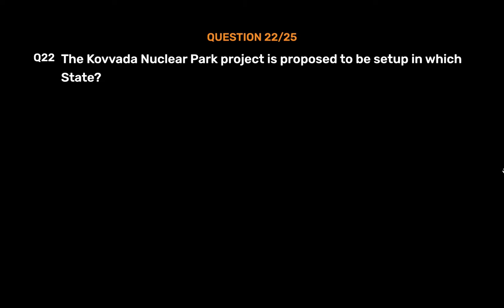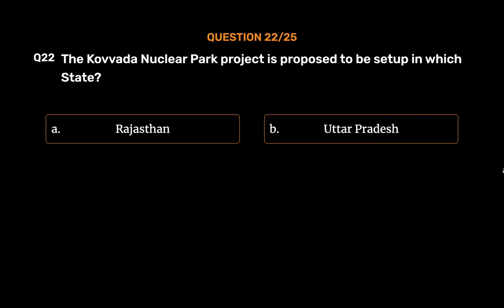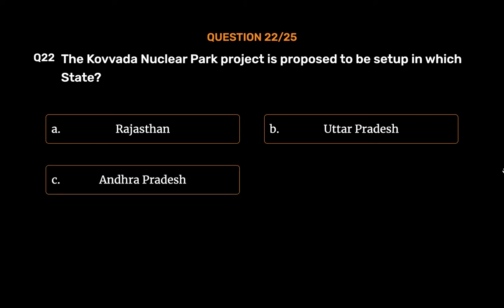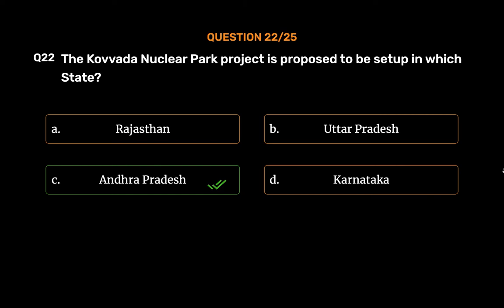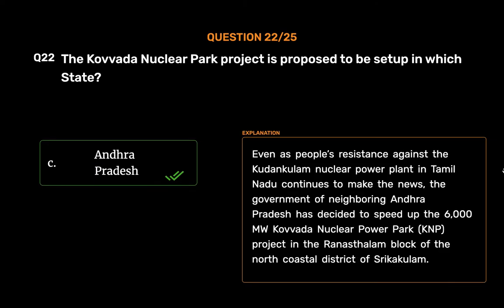Question No. 22. The Kovvada nuclear park project is proposed to be set up in which state? Option A: Rajasthan. Option B: Uttar Pradesh. Option C: Andhra Pradesh. Option D: Karnataka. The correct answer is Option C: Andhra Pradesh. The government of Andhra Pradesh has decided to speed up the 6,000 MW Kovvada nuclear power park project in the Ranastalam block of the north coastal district of Srikakulam.